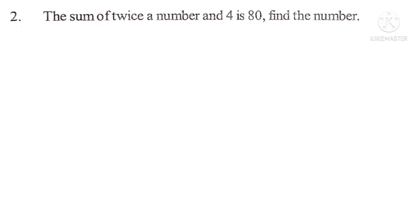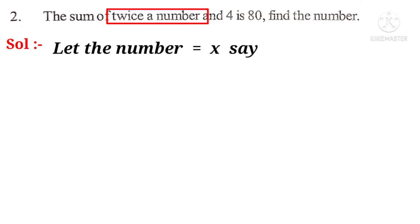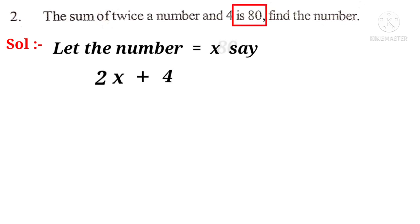Now, second problem. The sum of twice a number and 4 is 80. Find the number. Solution. Here, the number is unknown. So, let the number be equal to a variable x. Now, twice a number — twice means multiplied by 2, and the number is x, so 2x. The sum indicates the operation plus, and 4. Is 80 means equal to 80.